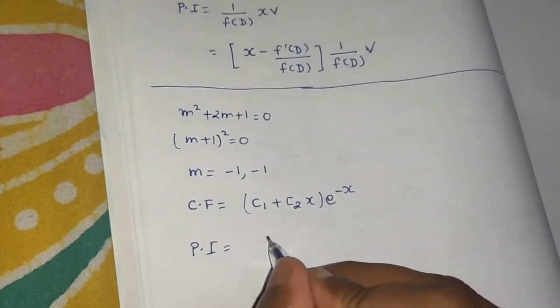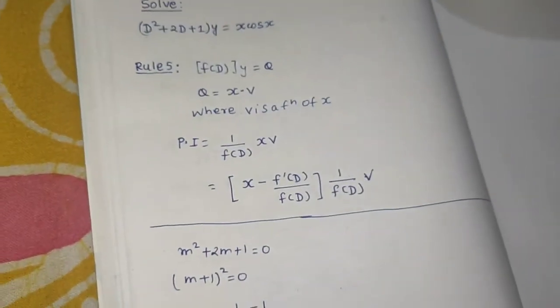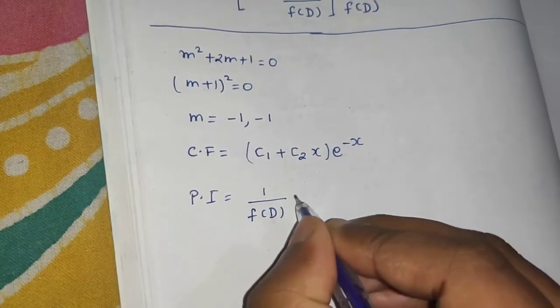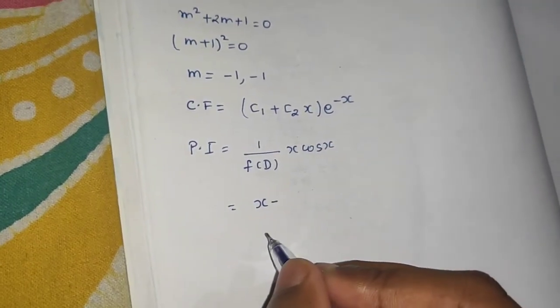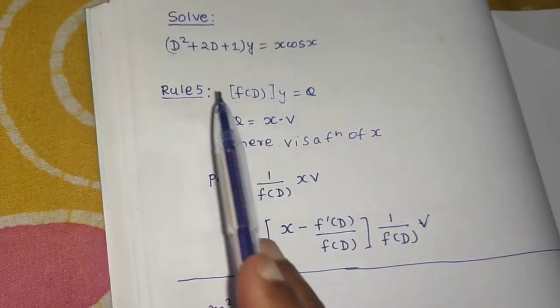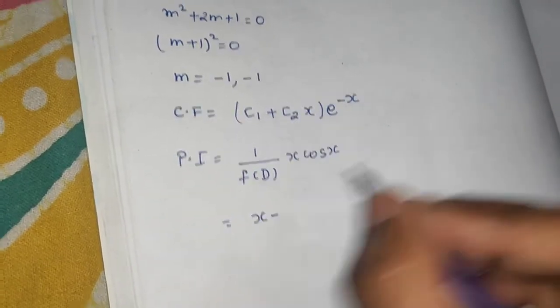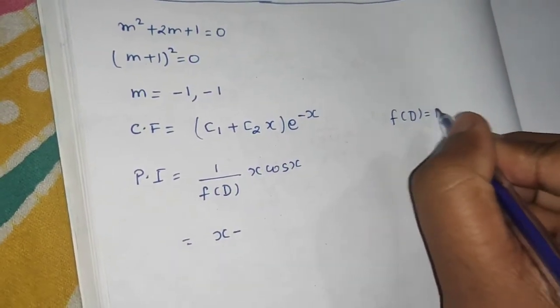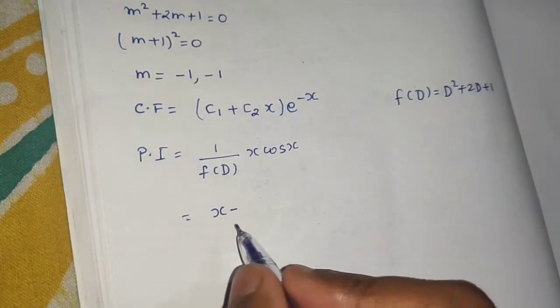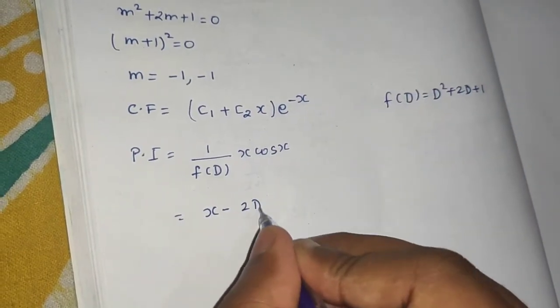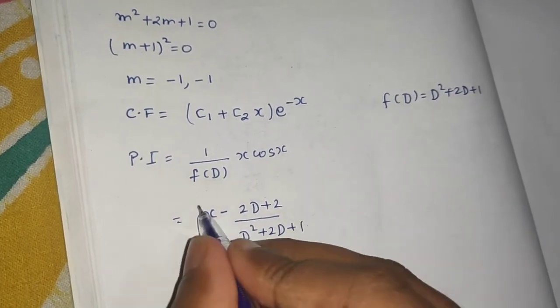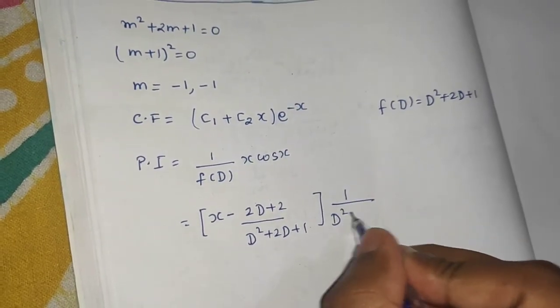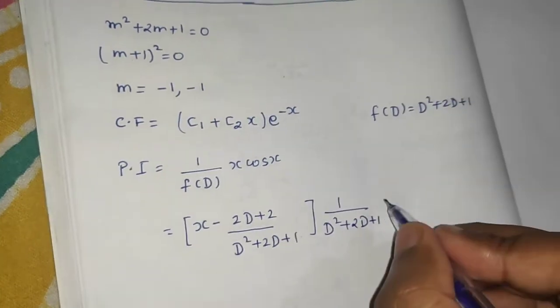Moving to the particular integral: the RHS is x·cos x, so PI = (1/f(D)) · x·cos x. Applying Rule 5, this becomes: x minus f'(D)/f(D), all times (1/f(D))·v. Here f(D) = D² + 2D + 1, so f'(D) = 2D + 2. The expression becomes x minus (2D + 2)/(D² + 2D + 1), with (1/(D² + 2D + 1)) operating on v = cos x.